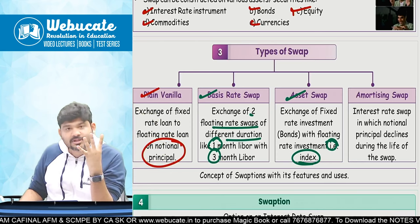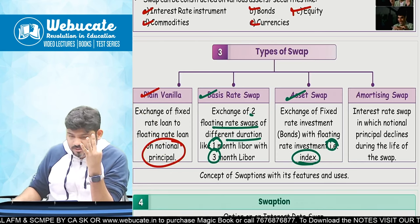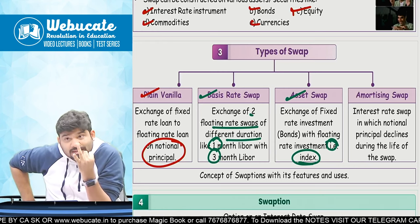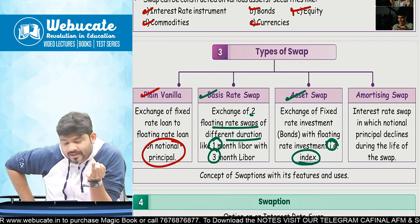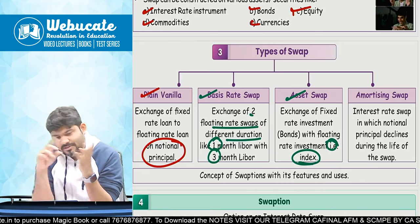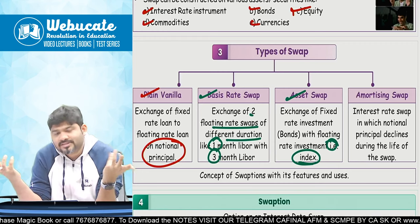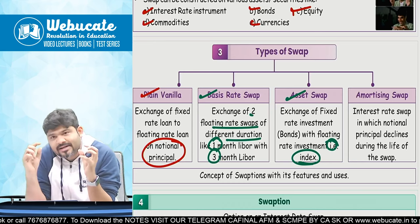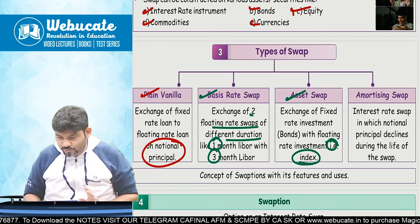Summary of four types of swaps: Plain Vanilla — fixed rate to floating rate, simple. Basis Rate Swap — floating to floating but different duration, e.g., one month vs three month. Asset Swap — exchange of bonds, similar to plain vanilla but real exchange happens in terms of principal plus interest. Amortizing Swap — only interest is exchanged; principal is managed by each party themselves.